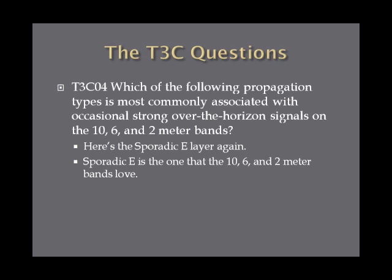Which of the following propagation types is most commonly associated with occasional strong over-the-horizon signals on the 10, 6, and 2-meter bands? It's a sporadic E layer again. Just remember, sporadic E are ionized pockets of gas that refract radio signals when radio signals hit them. And they're effective on 10, 6, and 2-meter bands especially.